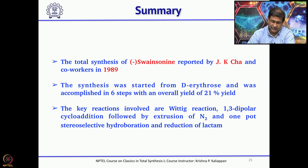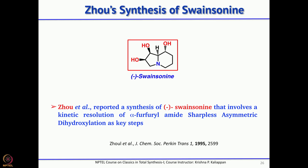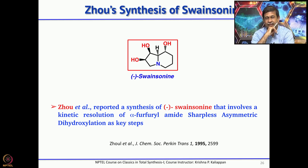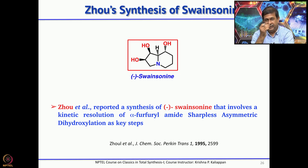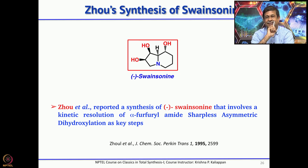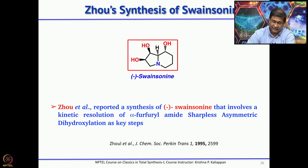The fourth synthesis was reported by Zhao. The key reactions are Sharpless asymmetric dihydroxylation and also kinetic resolution — specifically, kinetic resolution of a furfuryl imine. As we know, one can do Sharpless kinetic resolution on furfuryl alcohols; here instead of an alcohol, it was done on an NH-sulfonamide.